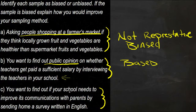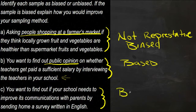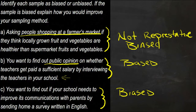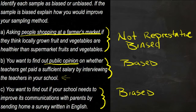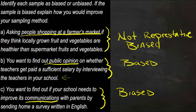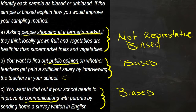The last one is: you want to find out if your school needs to improve its communications with parents, so you send home a survey written in English. Again, this is probably biased because the people who think the school does need to improve its communications are probably not the people who speak English as a primary language, or who read things that are sent home. If they're the kind of people that read things sent home, they probably are just fine with communications. The people who don't think communications are great are probably not going to read the survey, either because it's not in a language they're comfortable with or because they just don't generally read those kinds of things.